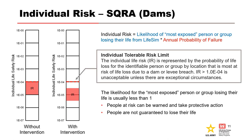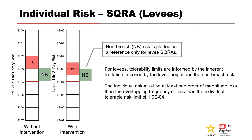For semi-quantitative assessments, the individual risk is estimated by multiplying the likelihood of the most exposed person or group losing their life by the point estimate for the APF. The resulting individual risk is plotted as an order of magnitude box. The individual tolerable risk limit is 1×10⁻⁴. If the total APF is less than 1×10⁻⁴ failures per year, the individual risk will also be less than 1×10⁻⁴. For levees, the individual risk must be at least one order of magnitude less than the overtopping frequency or less than 1×10⁻⁴. Non-breach risk is plotted as a reference only for levee SQRAs.